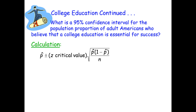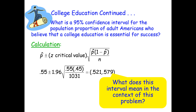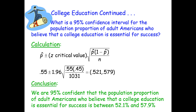All conditions are verified, so it's safe to proceed. We have p-hat plus or minus our z critical value; since we're computing a 95% confidence interval, that's 1.96. Using addition and subtraction, our lower bound is 0.521 and our upper bound is 0.579. We are 95% confident that the population proportion of adult Americans who believe that a college education is essential for success is between 52.1% and 57.9%.